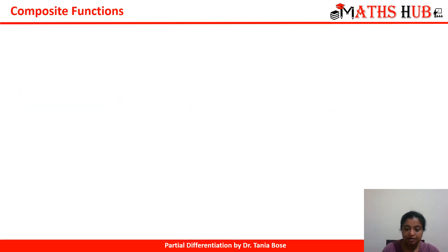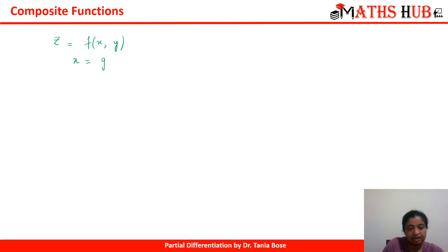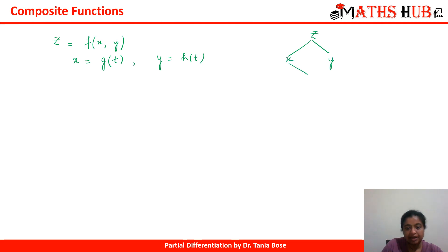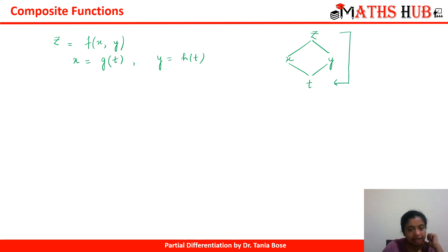You might have come across certain functions which are linked — for example, z is a function of x and y, and further x is a function of t and y is another function of t. So z is dependent on two variables x and y, and x and y are further dependent on the variable t. So can we say that z is also dependent on t?